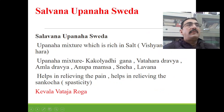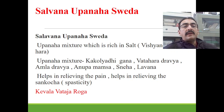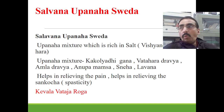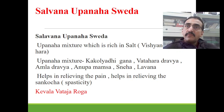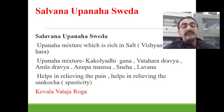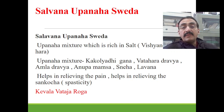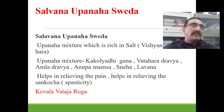Another method is salavana upanaha sveda — as the name suggests, it is rich in salt (lavana), because salt is vishandhara and vatahara. Salt is actually a very good vatahara, even better than amla for vatahara properties. The upanaha mixture contains kakolyadi gana, vatahara dravyas, amla dravyas, anupamamsa, sneha, and lavana. These drugs help in relieving pain and sankhocha or spasticity, and are especially good in kevala vatajanya conditions. This can also be done in cases of spasticity due to cerebral palsy in children.